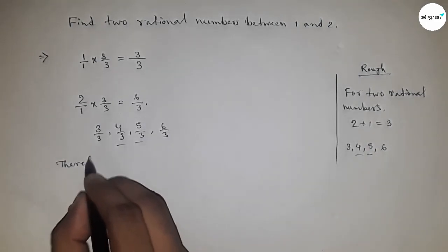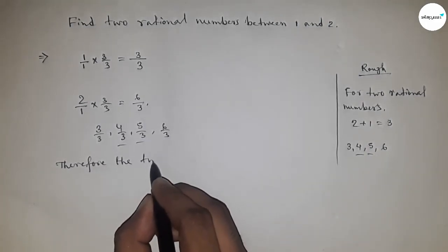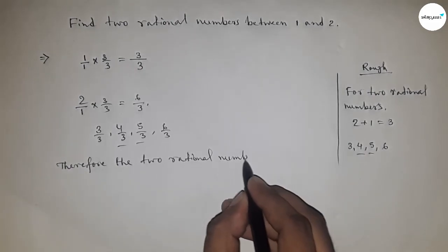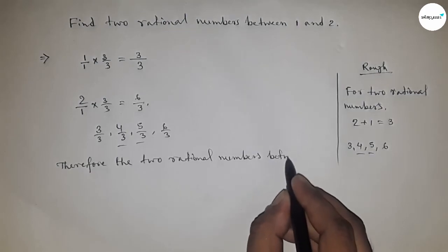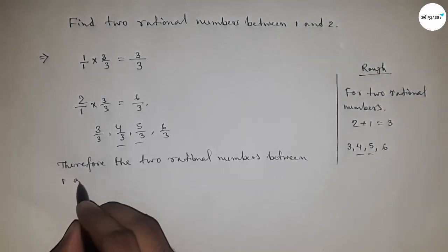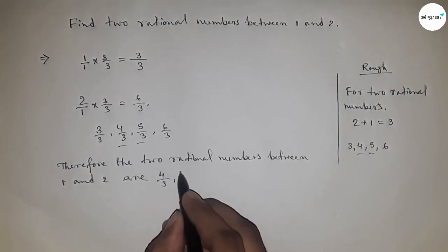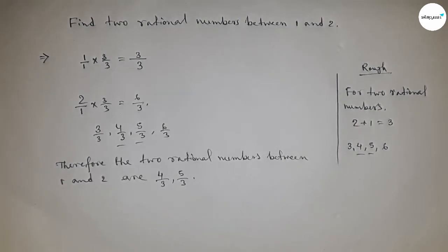Therefore, the two rational numbers between 1 and 2 are 4 upon 3 and 5 upon 3. So this is the process to find out the rational numbers between 1 and 2.